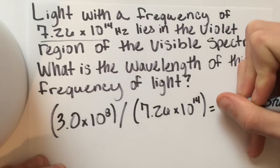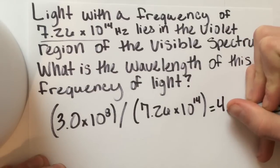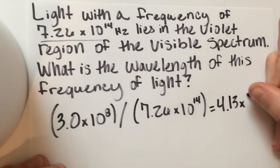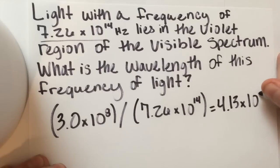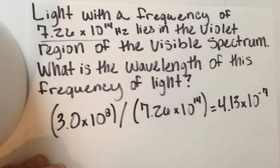And that leaves us with 4.13 times 10 to the negative 7th. So since I said that nanometers is what it's usually in, we're going to convert from meters to nanometers.